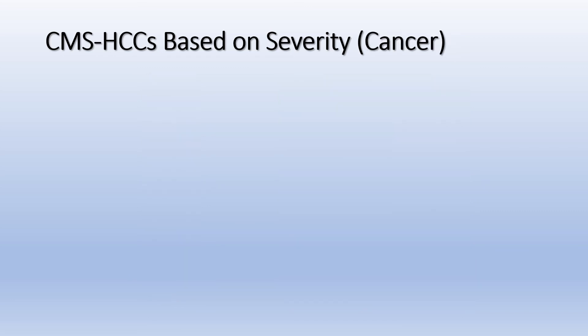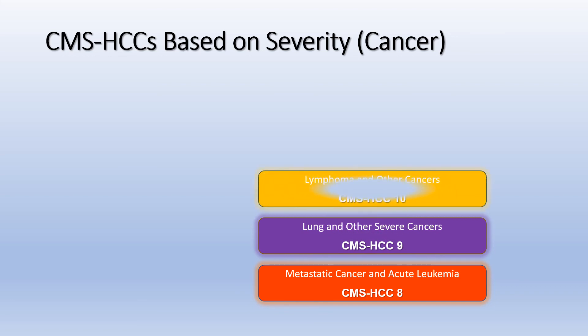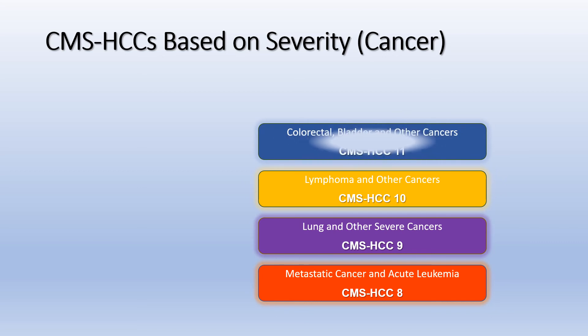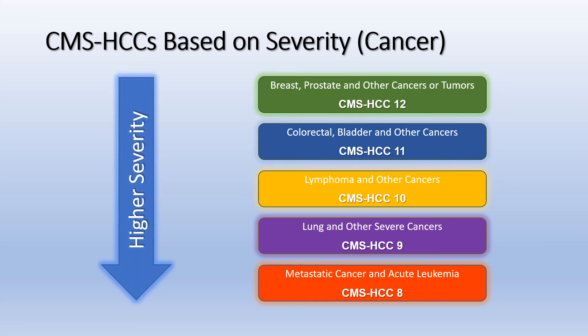Another example of an HCC hierarchy involves diagnoses of cancer and metastatic cancer. There are five HCCs: HCC-8 metastatic cancer and acute leukemia, HCC-9 lung and other severe cancers, HCC-10 lymphoma and other cancers, HCC-11 colorectal, bladder and other cancers, and HCC-12 breast, prostate and other cancers or tumors. HCC-8 is the highest category within this hierarchy. A patient with colon cancer with metastasis to the liver will have HCC diagnoses within both HCC-11 and HCC-8, but only the diagnosis within HCC-8 for the metastasis will impact risk adjustment.